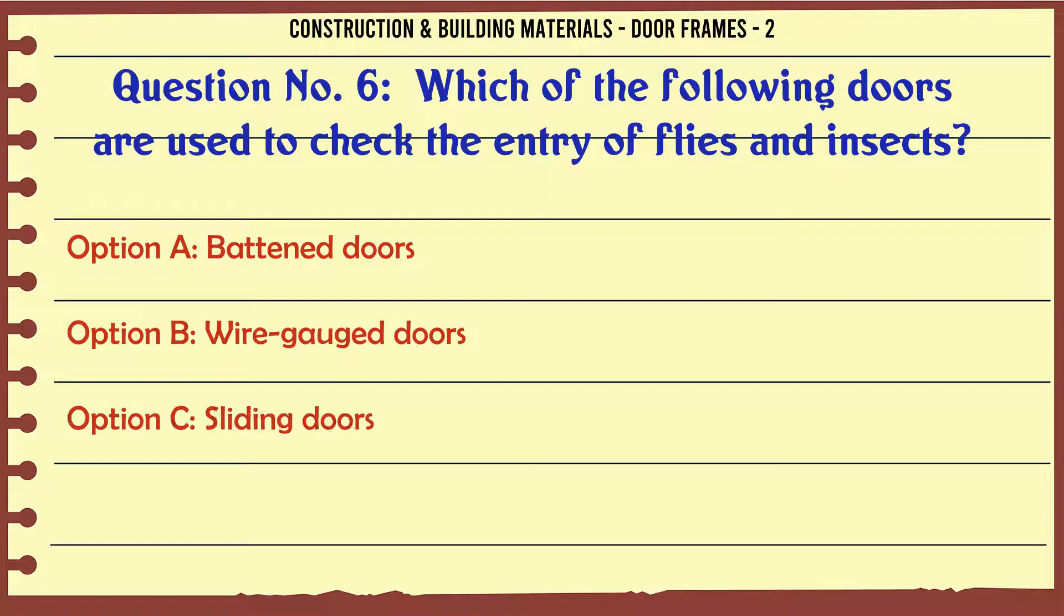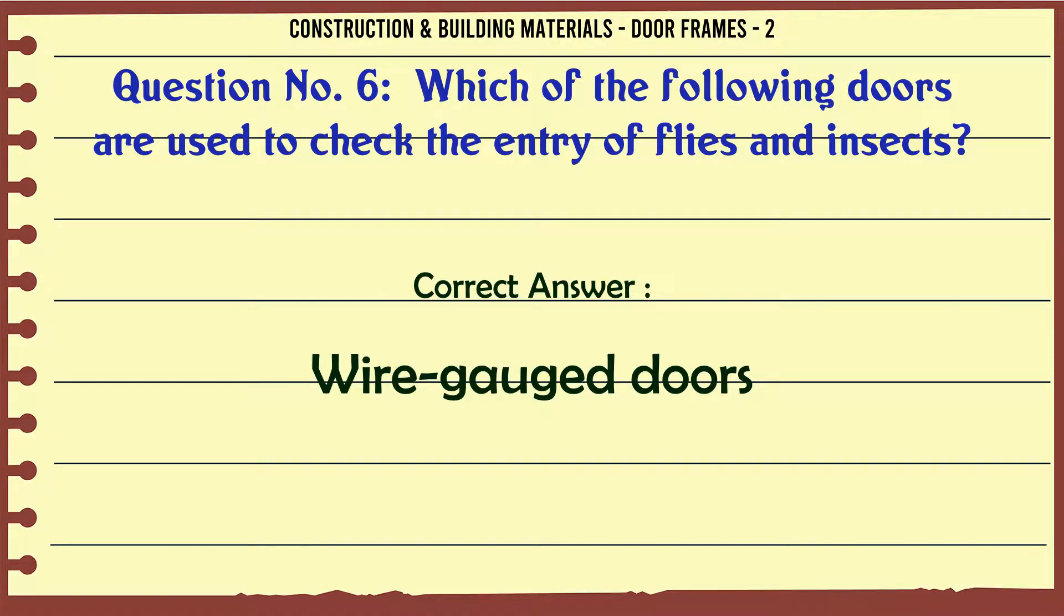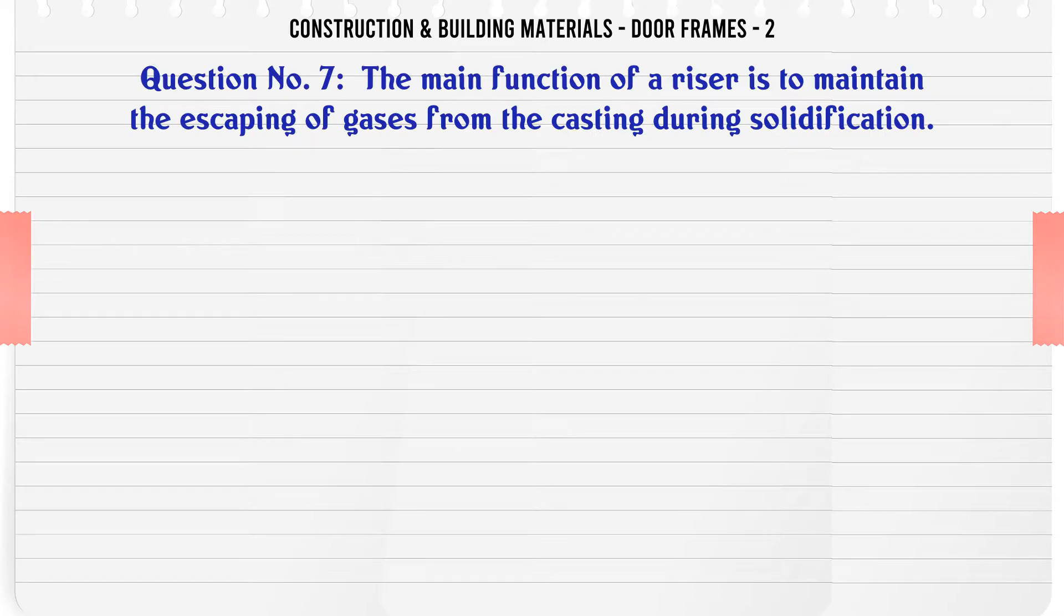Question 6: Which of the following doors are used to check the entry of flies and insects? A. Battened doors, B. Wire gauged doors, C. Sliding doors, D. Swing doors. The correct answer is wire gauged doors.